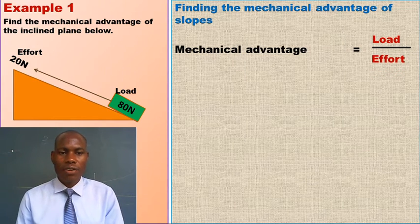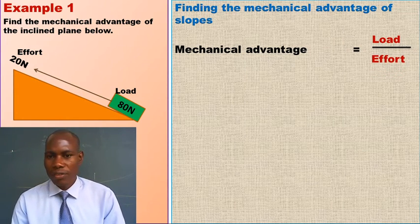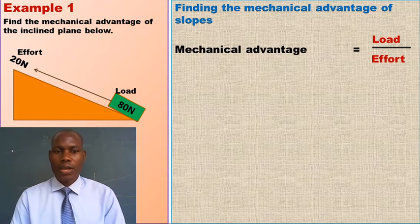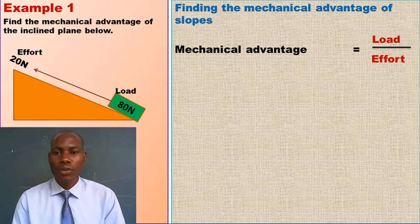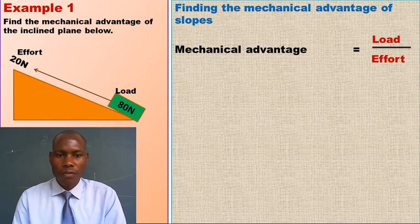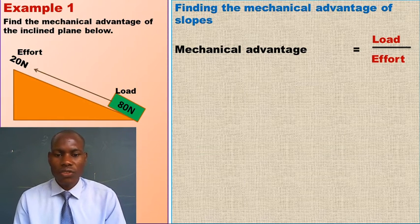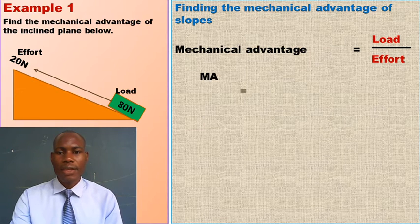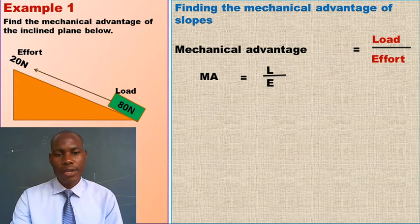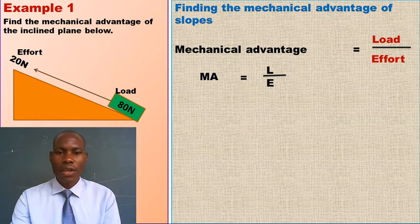Remember, mechanical advantage does not have units, dear children. We cannot state the units for mechanical advantage because it is a ratio of forces. Usually, ratios do not have units. Using our formula, we can now simplify it and say: MA is equal to L divided by E, where L stands for load and E stands for effort.